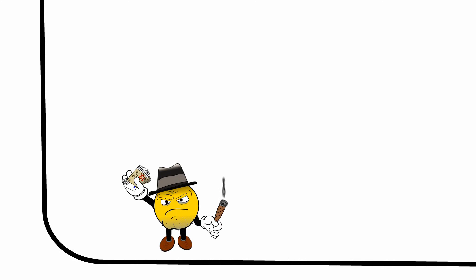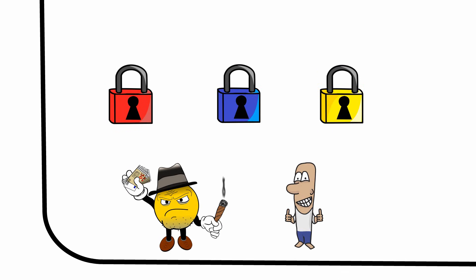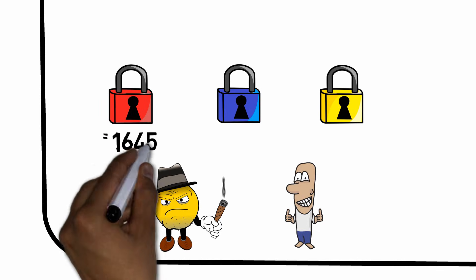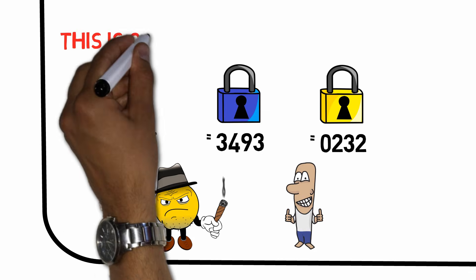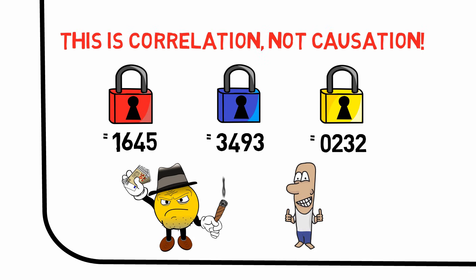A Mafia boss gives one of his minions three different locks with codes, a red, a blue and a yellow one. He asks for a method to pick such locks. After a few days, the underling is back, happily stating that if it's a red lock, just enter 1645. If it's blue, 3493. And if it's yellow, 0232. The underling would have mistaken correlation for causation and would completely have failed his task. There's no reasonable explanation for why the color red would have a person enter the exact digits 1645. It just happened to be so in this particular case.